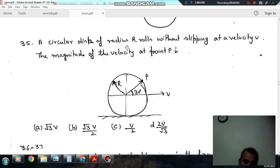Hello, welcome again. We are solving some questions of theory of machines. The topic is velocity, acceleration, and displacement of equilibrium. Random question number 35: A circular disk of radius R rolls without slipping at a velocity V. The magnitude of velocity at point P is... This is the figure given, this is the circular disk, this is point P.